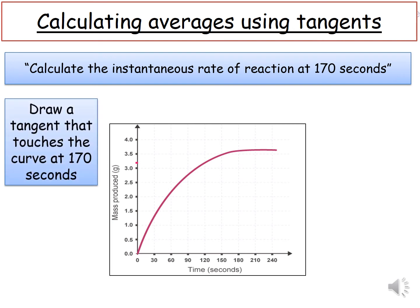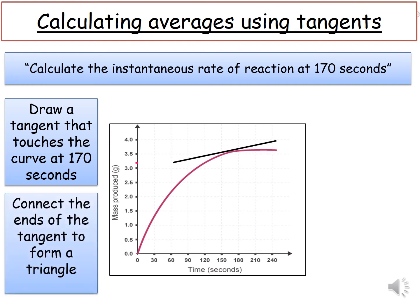The first thing you do is draw a tangent that touches the curve at 170 seconds. Next, connect the ends of the tangent to form a triangle.